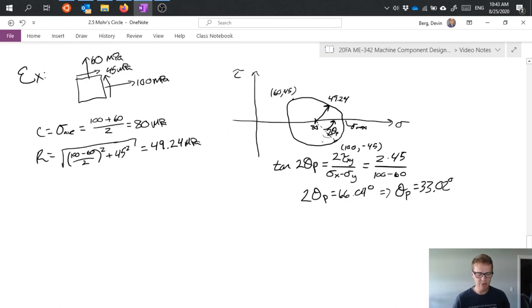Now of course I'm probably interested in these other values such as sigma max and at this point it's pretty easy to get that because if I know my center of my circle which is 80 and I know my radius which is 49.24 then of course I can just add those two and get 129.24 megapascals.